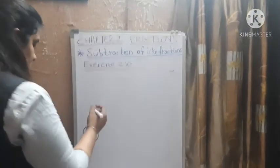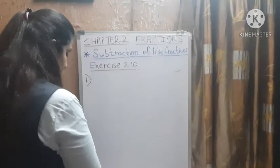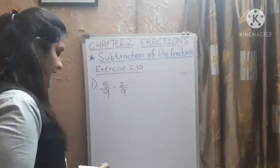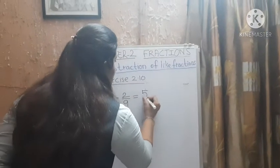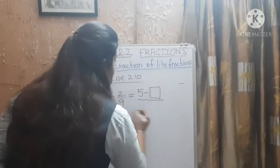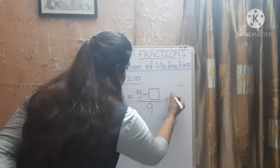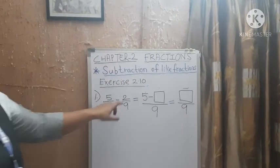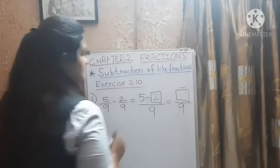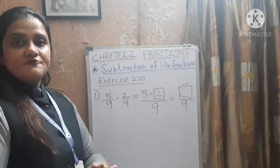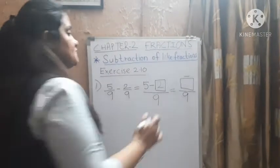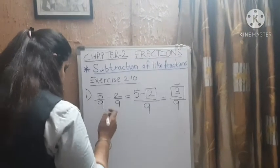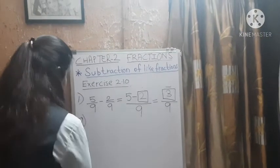First sum: 5 by 9 minus 2 by 9. It is equal to 5 minus box, denominator 9. 5 is written; what is not written is 2. Write 2 in the box. 5 minus 2: 5 on your finger, 2 close — how many? 3. Your answer is 3 by 9. Now one more sum — sum number 8: 5 by 11 minus 3 by 11.